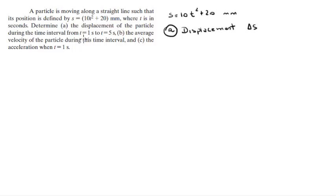To find the displacement from T=1 to T=5, you need to find S(1). When you plug in T=1, 1 times 10 equals 10, plus 20 equals 30, so S(1) = 30 millimeters. And S(5)...